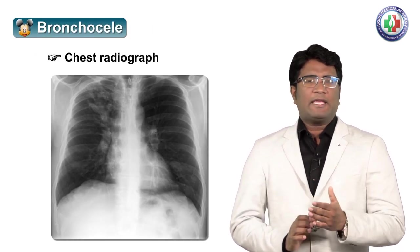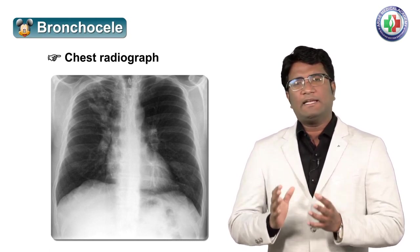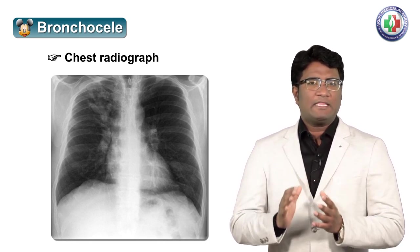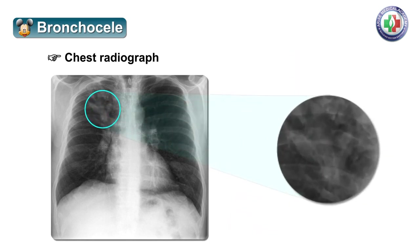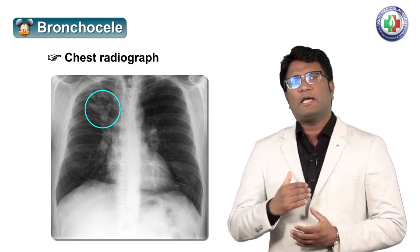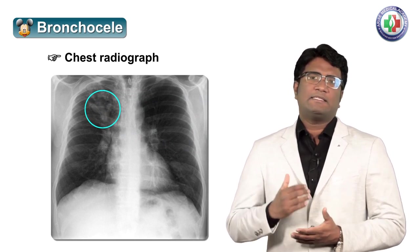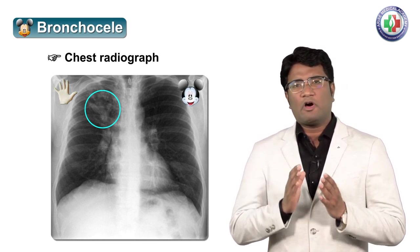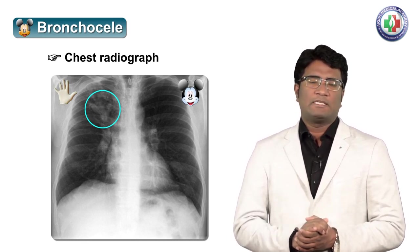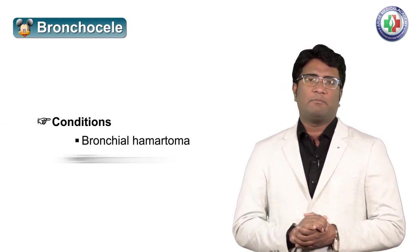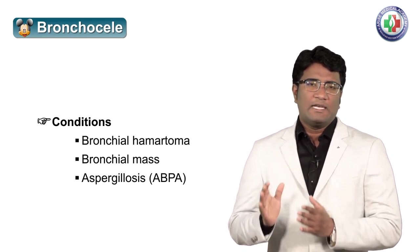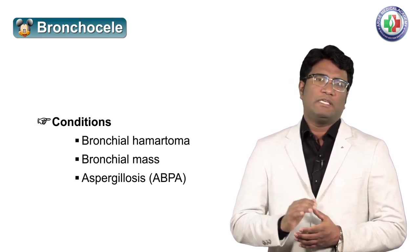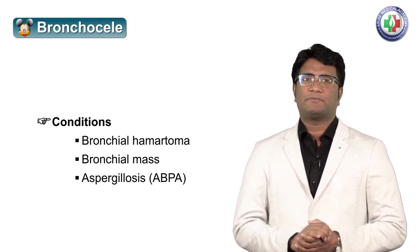Another site where we see Mickey Mouse appearance is on a chest radiograph. In cases of bronchoceles — which are mucus-filled dilated bronchi — the appearance of these dilated bronchi can take the shape of a finger-in-glove appearance, also called Mickey Mouse appearance. Whenever we have mucus plugging distal to an obstruction, the bronchi dilate producing this finger-in-glove or Mickey Mouse appearance. This is associated with bronchoceles and mucoceles, seen in conditions causing bronchial obstruction such as bronchial hamartomas, bronchial masses, or allergic bronchopulmonary aspergillosis.